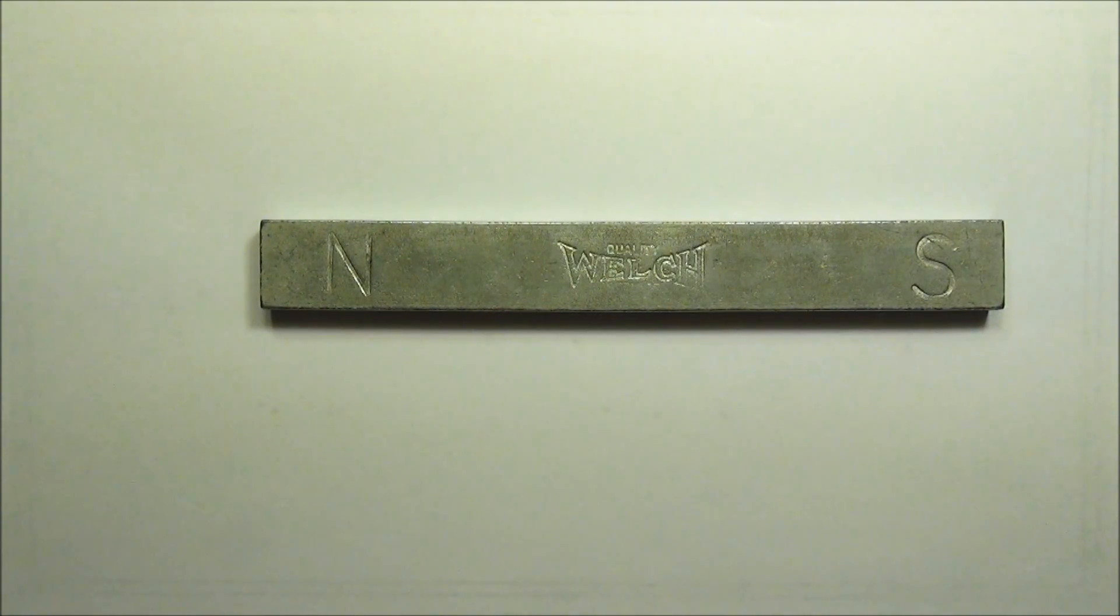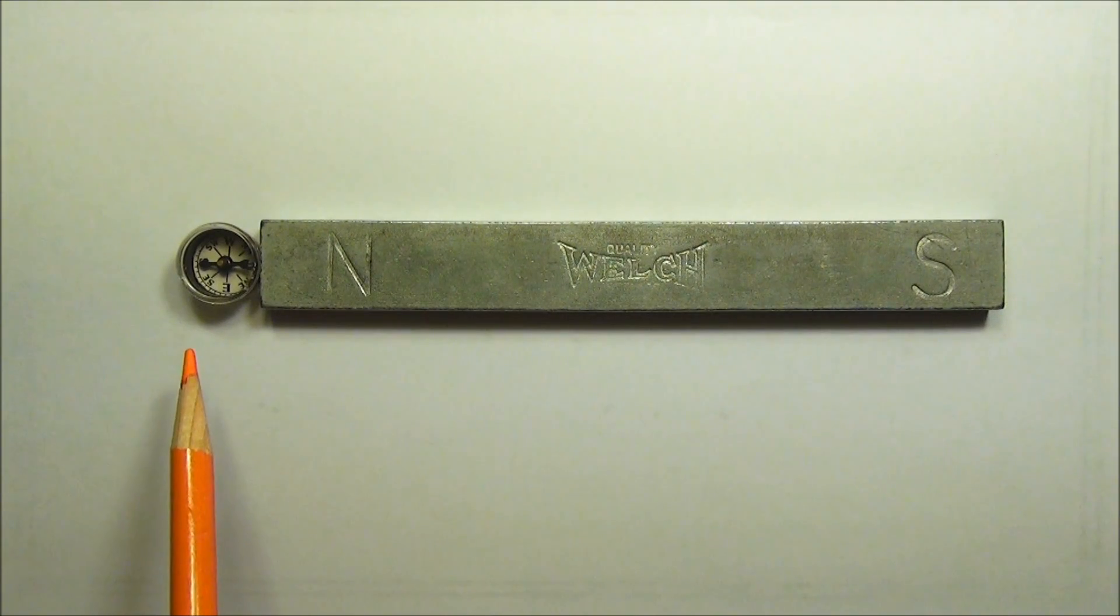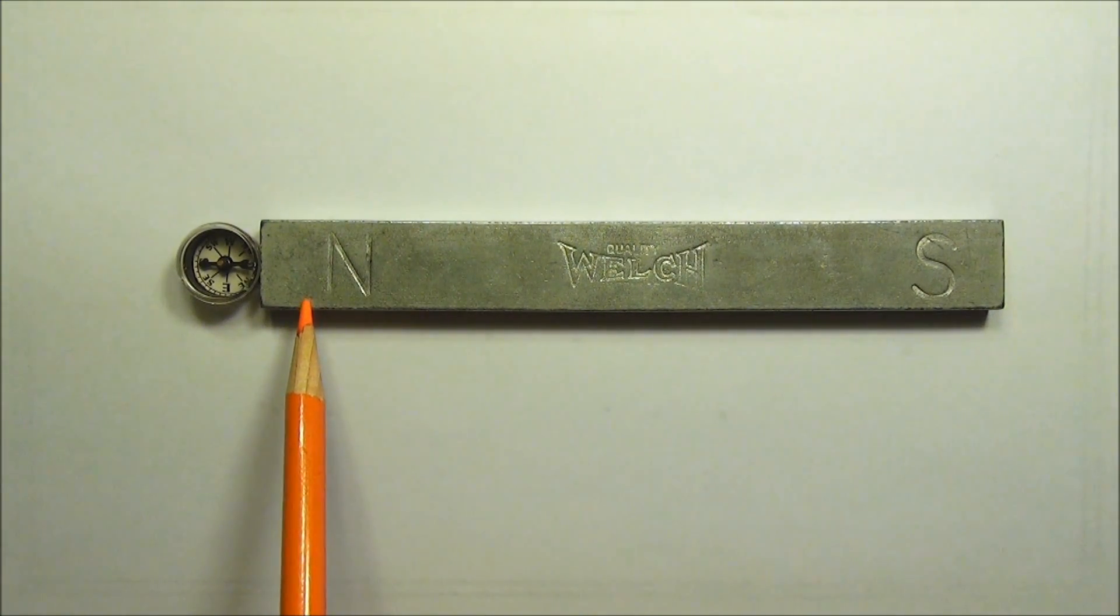I'm going to use this bar magnet to produce external magnetic field for a compass and some iron filings. When I place the compass magnetic dipole in the external magnetic field, we can see that the dipole aligns with the external magnetic field, which goes out of the north of the bar magnet.